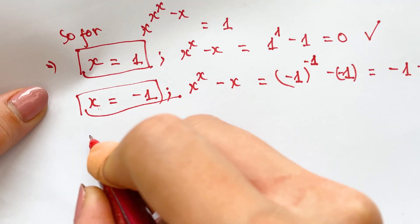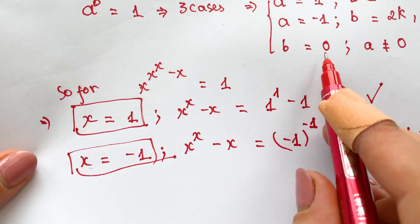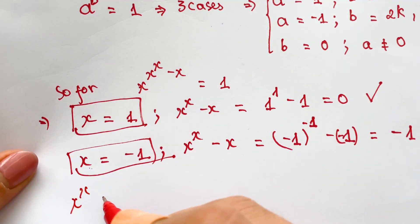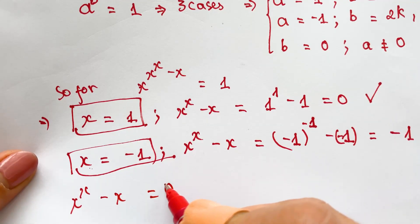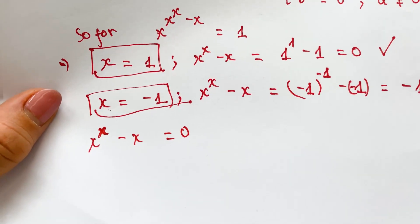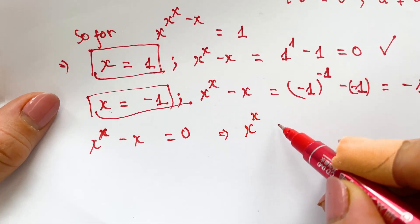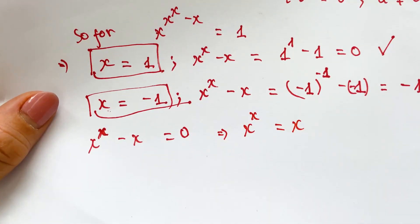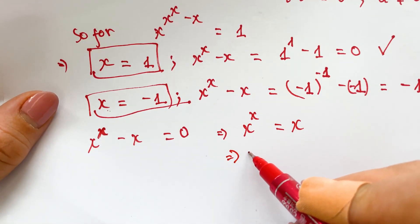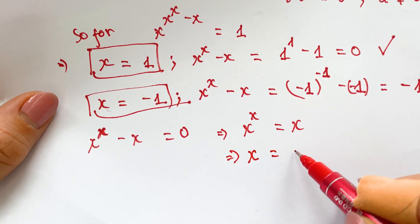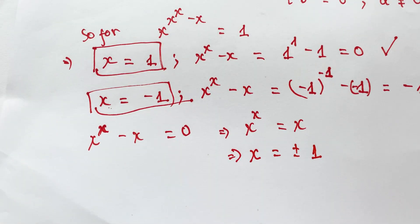For Case 3, b = 0, so x^x - x = 0, which means x^x = x. Solving this gives x = ±1.